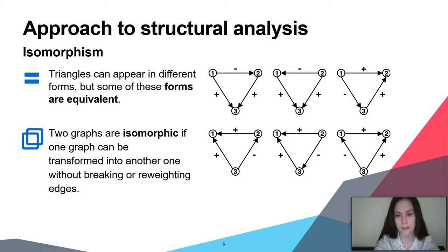Simply, two graphs are isomorphic if one graph can be transformed into another without breaking or adding edges. We can see on these slides a complete set of signed isomorphic directed graphs as an example.